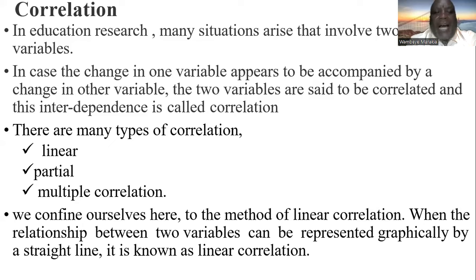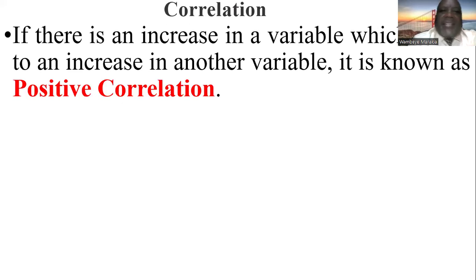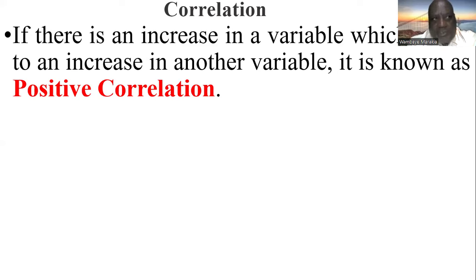There are many types of correlation, but today I want to introduce linear correlation, partial correlation, and multiple correlation. I want us to confine ourselves to linear correlation — the relationship between two variables that can be represented graphically by a straight line. When there is an increase in one variable that leads to an increase in another variable, this is known as positive correlation.